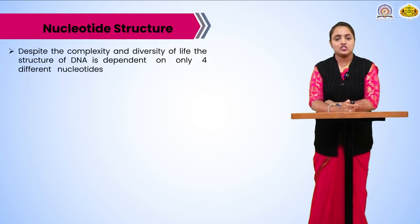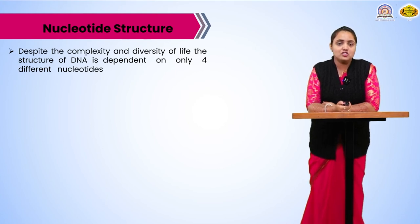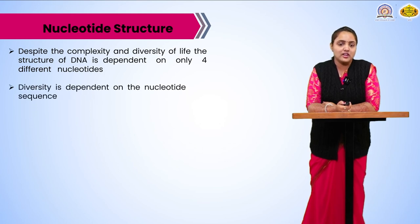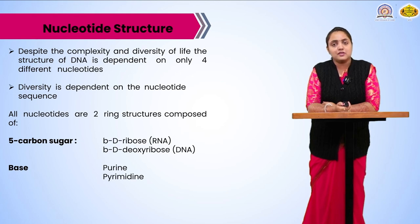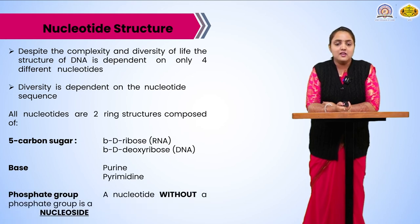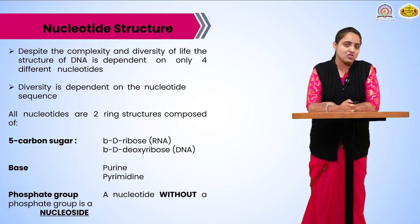Nucleotide structure: despite the complexity and diversity of life, the structure of DNA presents only four different types of nucleotides. Diversity is dependent on the nucleotide sequence — that is the 5-carbon sugar and the base. Bases are the purines and pyrimidines, and a phosphate group. Without the phosphate group it is called a nucleoside, and with the phosphate group it is called a nucleotide.